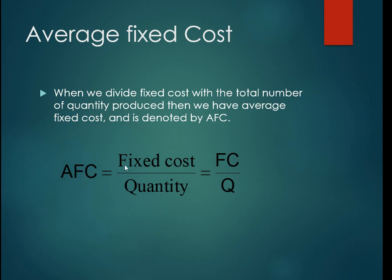AFC equals fixed cost divided by the number of quantity produced. We can write this formula as AFC = FC/Q, where FC is fixed cost and Q is quantity.